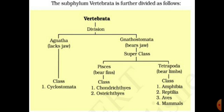Amphibians evolved into the next class, Reptilia. Most reptiles are aquatic, some are terrestrial, and some are arboreal — living on plants or trees. Compared to amphibians, in reptile animals the gills are completely absent and well-developed lungs are present for respiration.